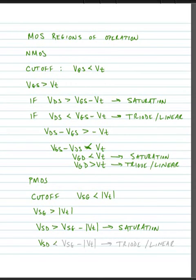If VSD is less than VSG minus the absolute value of the threshold voltage, then the device is in the triode or linear region.